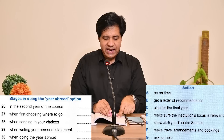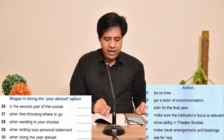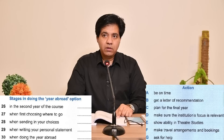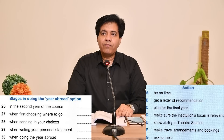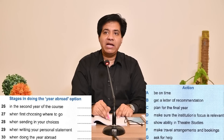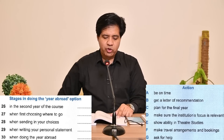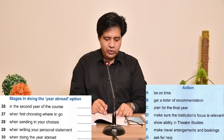Question 28: when sending in your choices. Audio: 'About six months before you go, you have to email the scheme coordinator with your top three choices. I had a friend who missed the deadline and didn't get her first choice, so you do need to get a move on. Certain places are very popular with everyone.' So 'missed the deadline' means you must be on time — for 'be on time' they use the phrase 'meet the deadline.' The answer for Q28 is A — be on time.